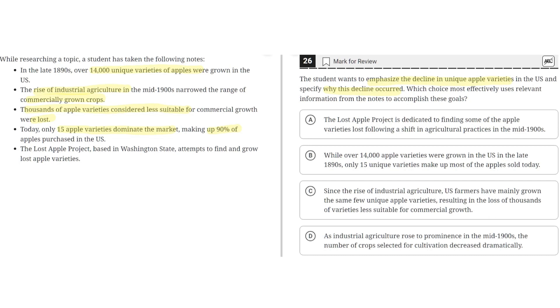Option A says the Lost Apple Project is dedicated to finding some of the apple varieties lost following a shift in agricultural practices in the mid-1900s. This is incorrect because this does not emphasize the decline in unique apple varieties. It only says why this decline has occurred and describes the Lost Apple Project. So A is incorrect.